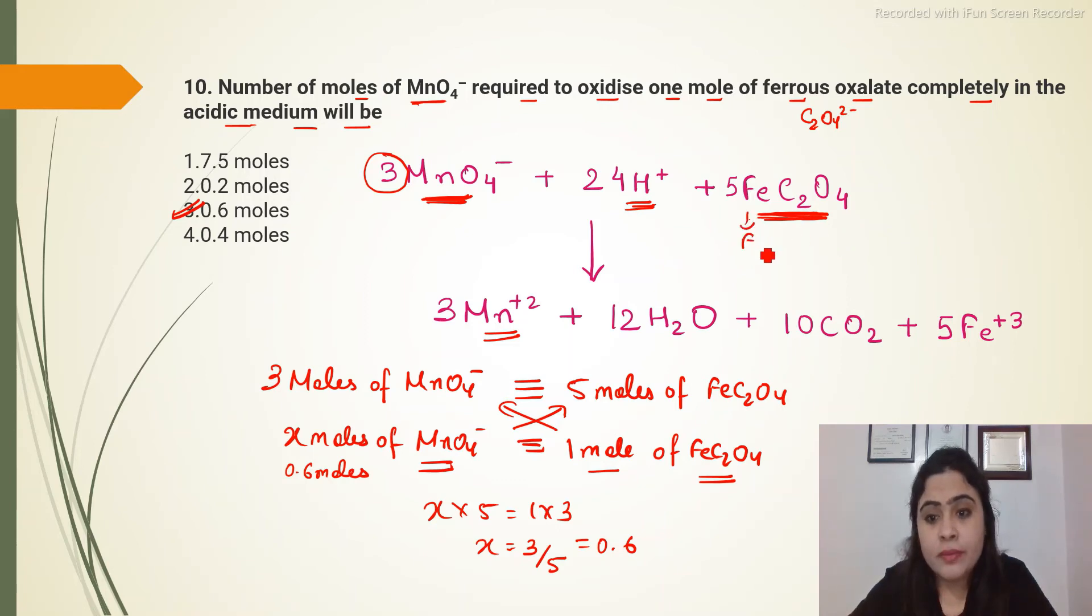So here is Fe+2, so if it will lose, then what will be Fe+3. So Fe+3 will be in the product side, C2O4 will get converted into CO2, and rest of the remaining oxygen will combine with hydrogen to form water. So as simple as that products will form automatically.